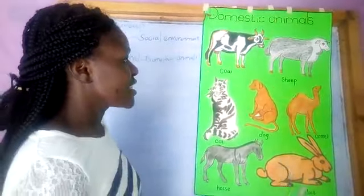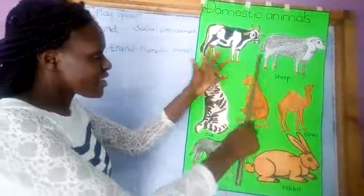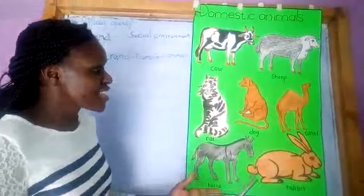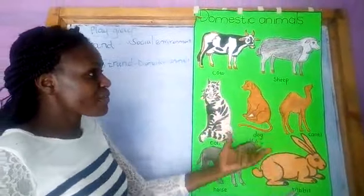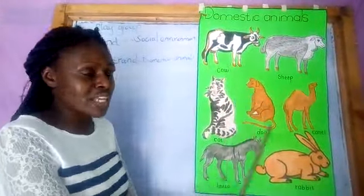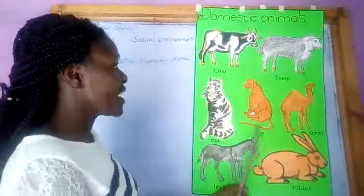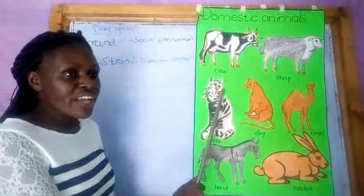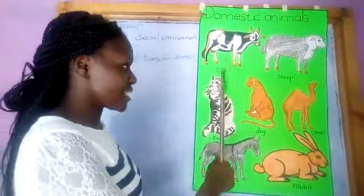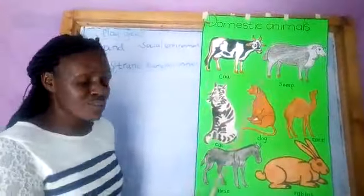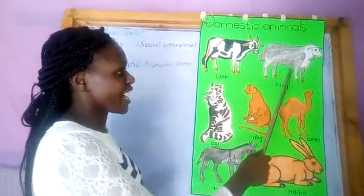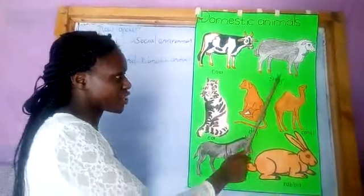So once we have known these domestic animals, there are some things that we get from them. A cow gives us milk and meat. A sheep will give us meat.